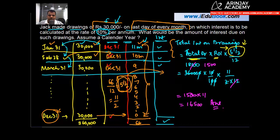So this was fairly simple, no rocket science, just apply this formula and you get the interest on drawings. We've also understood how we arrived at this period.